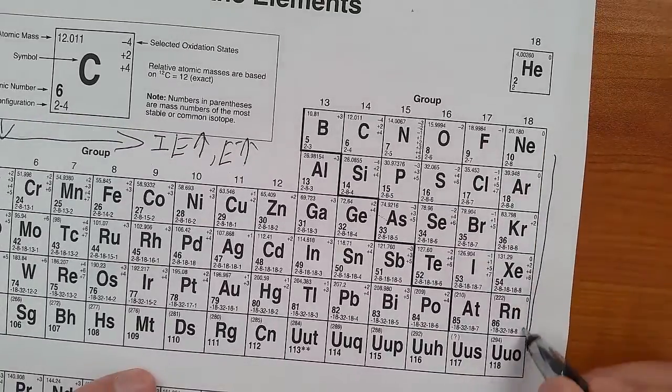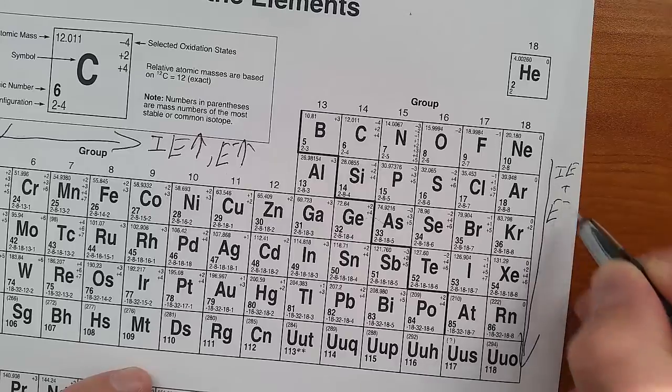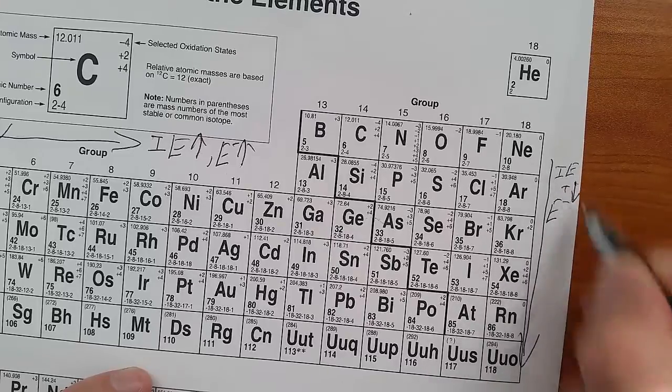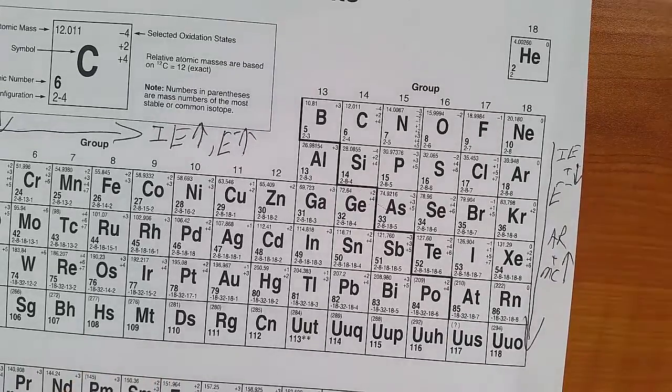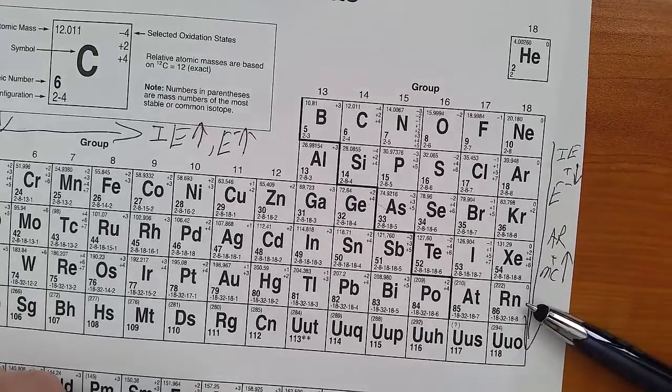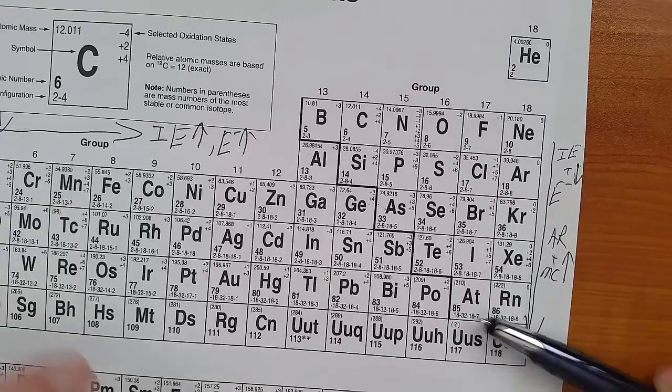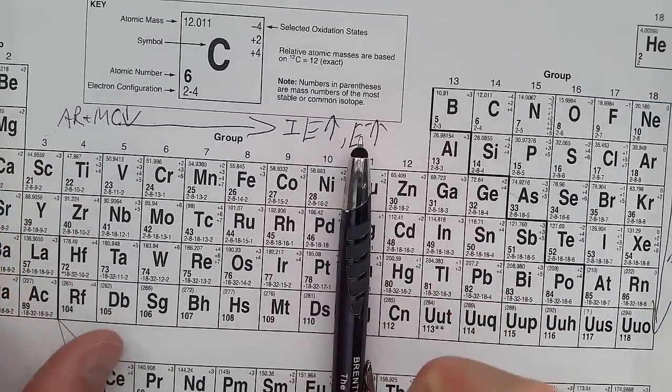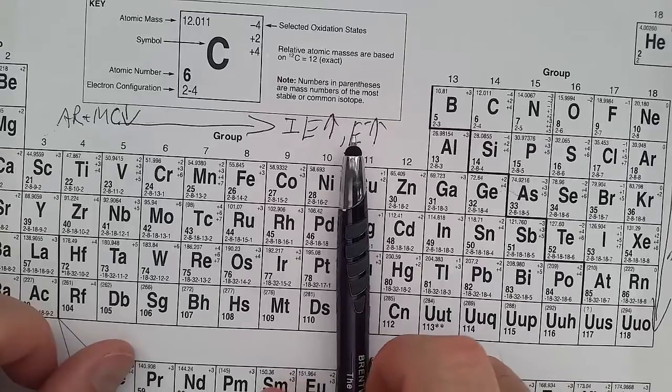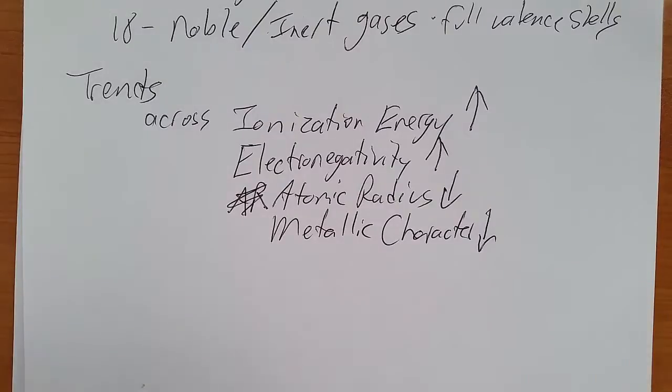Now going down in a group, everything's the opposite. So ionization energy and electronegativity both decrease. Atomic radius and metallic character both increase. Now the atomic radius and metallic character both increase because there's more shells. So it's going to get bigger. Going across, the atomic radius decreases because the pull of the nucleus is pulling harder on the electrons, pulling them in closer to the nucleus.